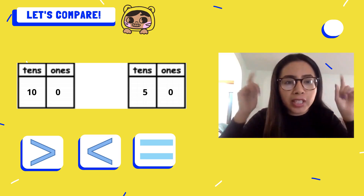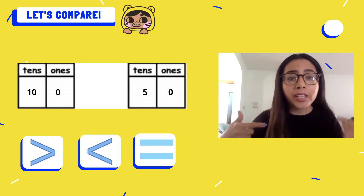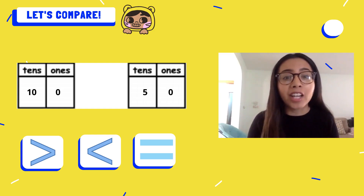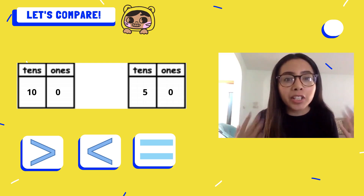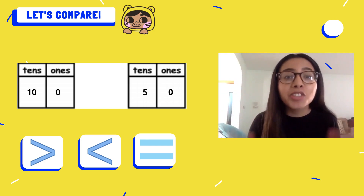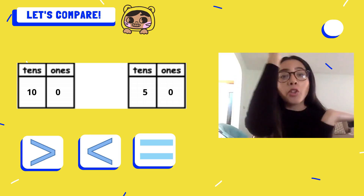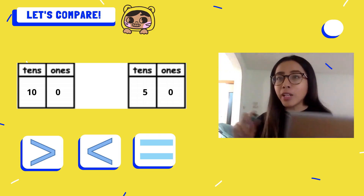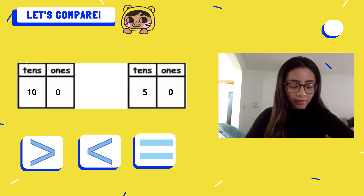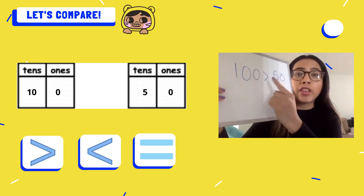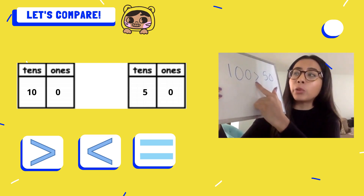But now I have to figure out which of these symbols I should use. Which of these will show me that a hundred is greater than fifty? I remember that just like in our video, the open side is a hungry alligator's mouth that eats the bigger number. So we want the mouth to be open towards the biggest number — open towards one hundred. The symbol we would use is the one that shows a hundred is greater than fifty. This is our greater than symbol.